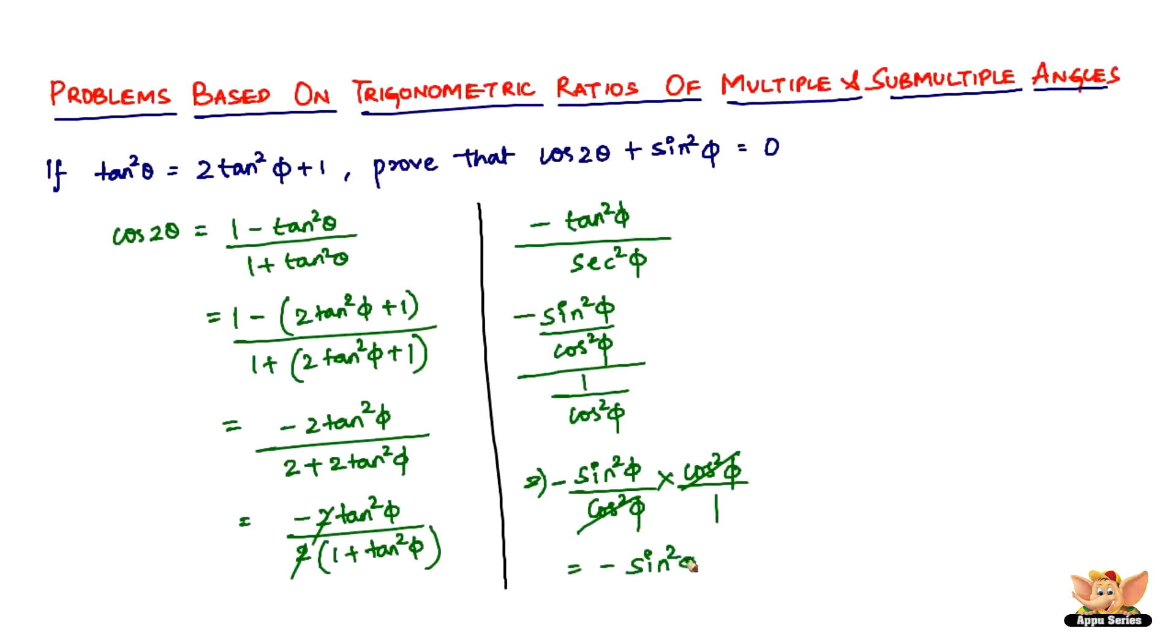So what that means is if you notice carefully we've started off with cos2θ and that equals -sin²φ. So cos2θ equals -sin²φ, which is nothing but if you take -sin²φ to this side it becomes cos2θ + sin²φ equal to, there's nothing left here, so therefore it's going to be zero.